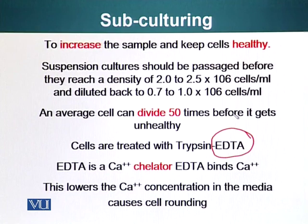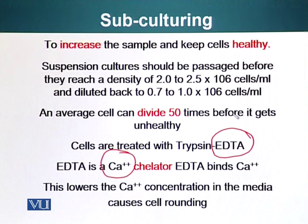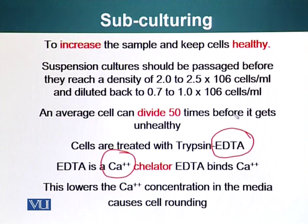EDTA is basically a chelator — it grabs and holds calcium ions. When calcium ions are bound to EDTA, they are removed from the system and are no longer available to the cell. A lot of adhesion proteins rely on the presence of calcium ions to function properly. So if there is low calcium, the adhesion proteins that make cells stick to each other or to the substrate stop working properly. Because we use EDTA, we can also lower the concentration of trypsin used, which is beneficial for the cells.